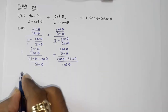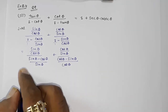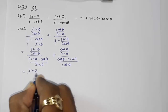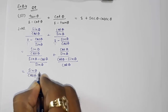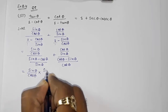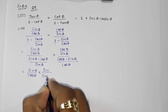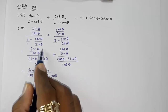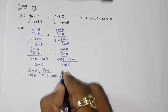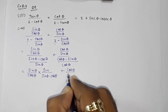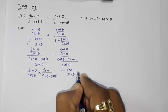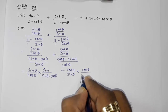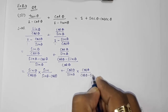Now we have a fraction upon a fraction, so we take the reciprocal. This gives us sin θ divided by cos θ, multiplied by sin θ upon sin θ minus cos θ, plus cos θ upon cos θ minus sin θ.